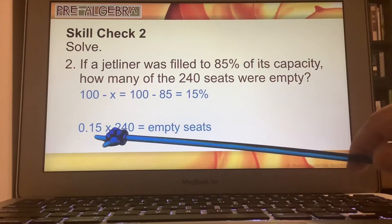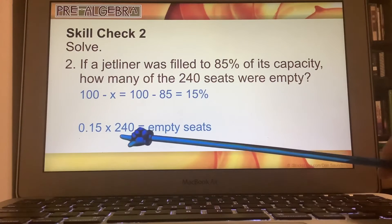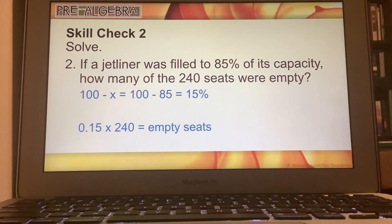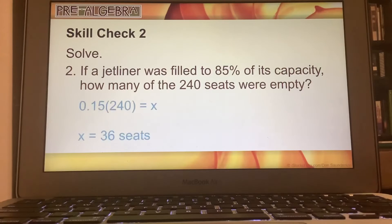And then so 15% of the 240 seats were empty. Of means times. So 0.15 times 240 is equal to the number of empty seats that we have. And so that's going to be 0.15 times 240. And then we get 36 seats.